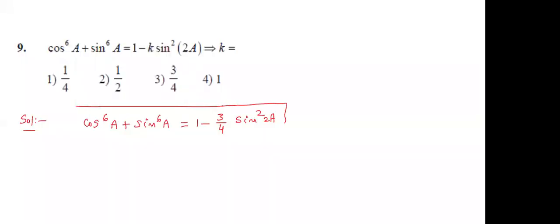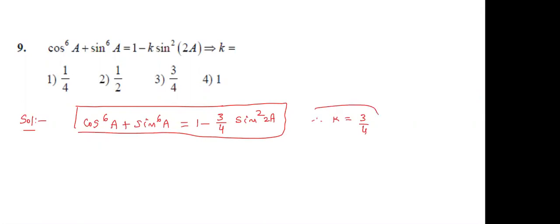Next: the formula cos⁶a + sin⁶a = 1 − (3/4)sin²2a. By comparing both sides, the value of k is 3/4. If you know the formula, you can get the answer within 5 seconds. If you don't know the formula, here is how to derive it.